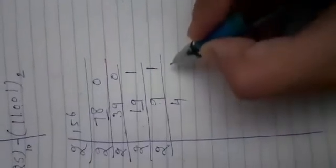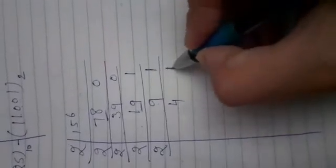Now 9 is divided by 2, giving 4 and the remainder is 1.